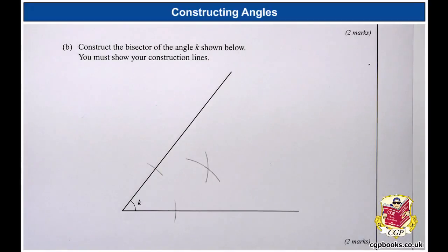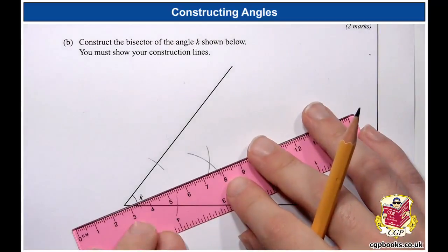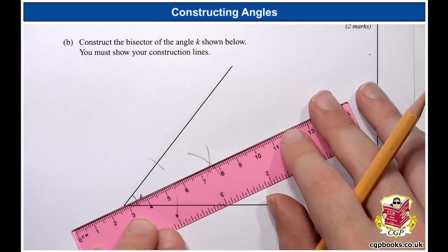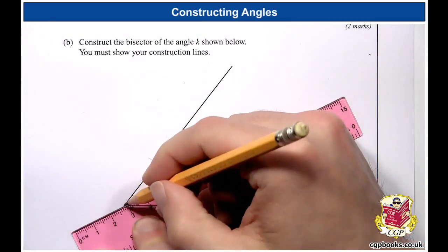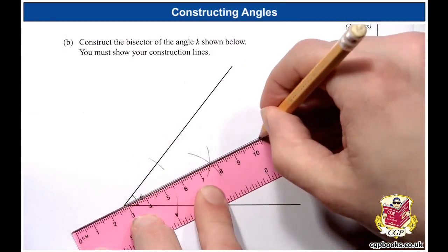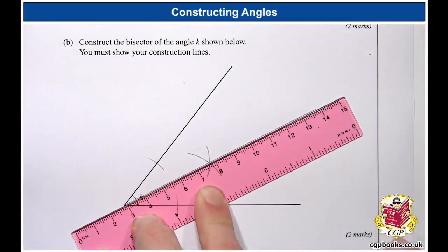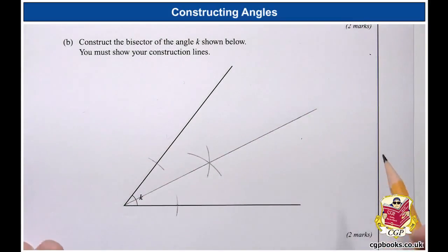And so now I've got this cross again. So I can just line up using my ruler. The corner of the angle here where the two arcs cross one another. And this will draw the angle bisector. So there we go. And that's our angle bisector.